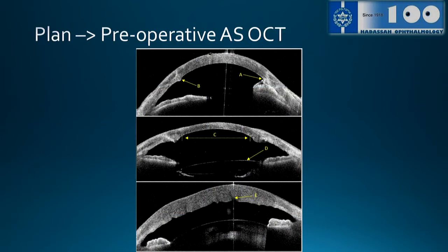With preoperative OCT, image A shows anterior synechiae; B shows the interface between the PK graft and host where most detachment happens; C shows how we size the DMEK graft. We are not using the whole cornea — we used to use slit lamp examination or the size of the previous PKP — but the actual size needed is determined by the posterior slope. This is how we size our DMEK grafts now.